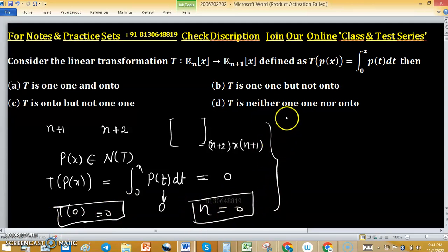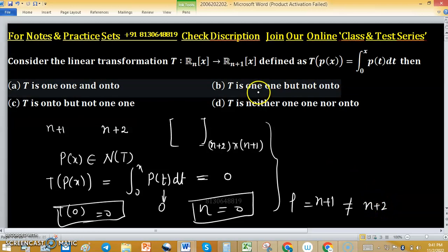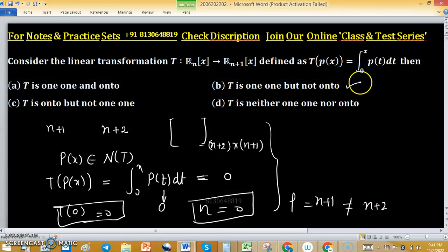In other words, you can find the matrix representation. Since nullity is 0, you can apply the rank-nullity theorem. The rank will be n+1. Rank is n+1, which is not the same as n+2, the dimension of the co-domain. So this is not onto. Therefore, T is one-to-one but not onto. Option b is correct.